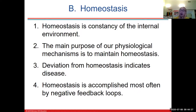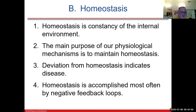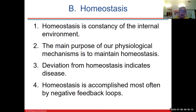Homeostasis — I'm sure you've heard of this in high school and it was mentioned in anatomy. Homeostasis is the constancy of the internal environment. If I ask you what the body temperature is, you'd say 37 degrees Celsius — we don't calculate in Fahrenheit. The main purpose of our physiological mechanisms is to maintain homeostasis: to keep all our levels within a narrow band, whether it's blood sugar, temperature, calcium levels, et cetera. Any change in homeostasis indicates disease.